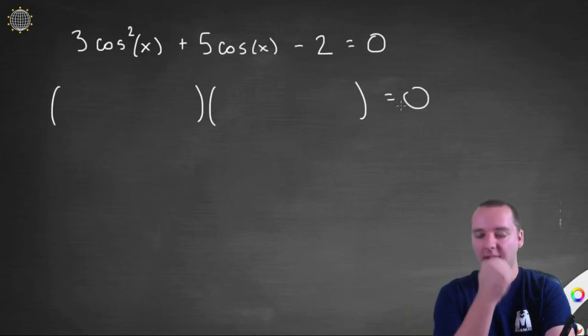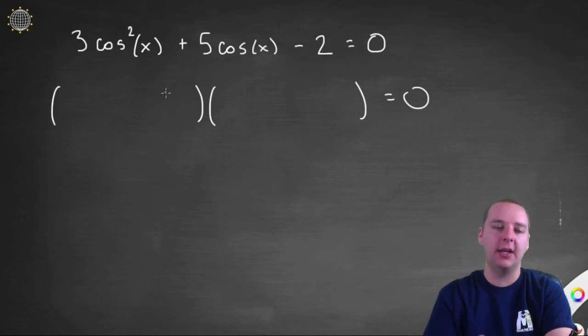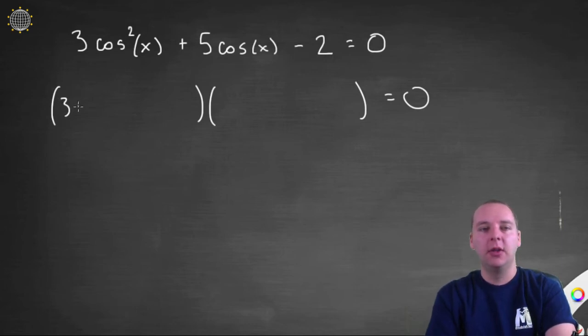The only difference is instead of having like x plus 7 and x minus 1, you have a cosine x as opposed to just an x. So let's see how this guy would factor. 3 cosine squared, I think the only way that factors is 3 cosine x and cosine x, I think that would be the only way to get 3 cosine squared x.